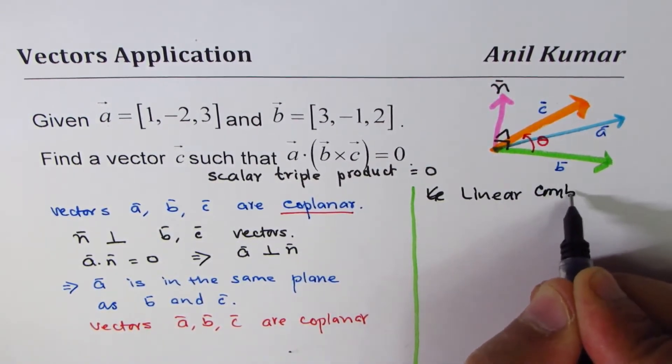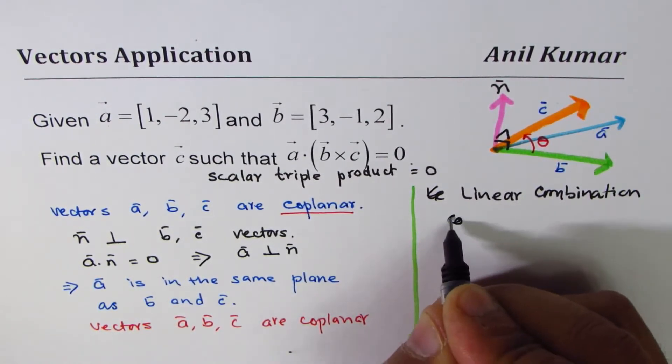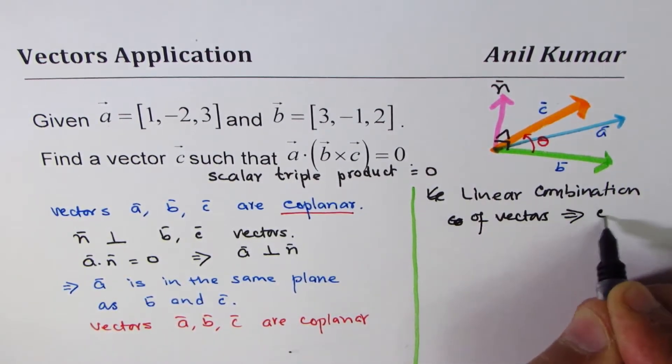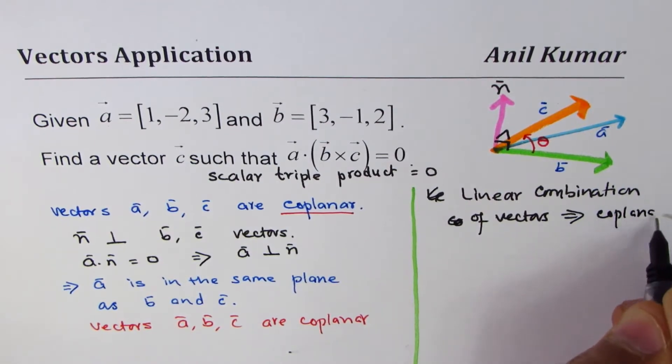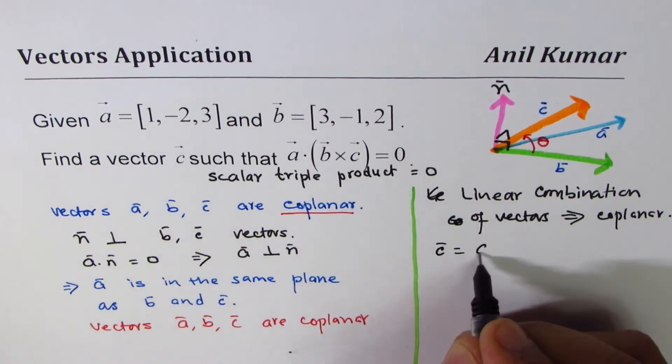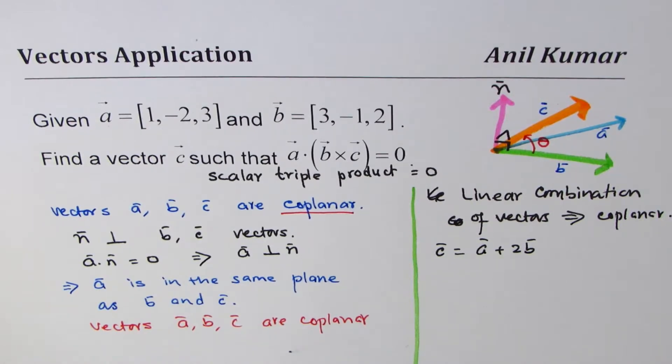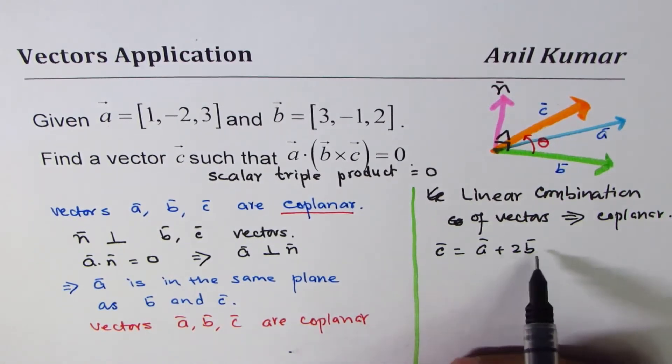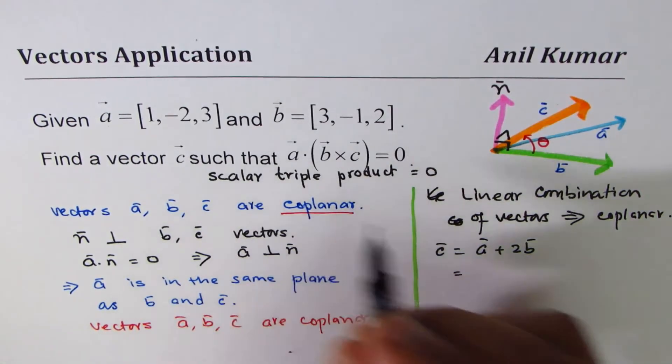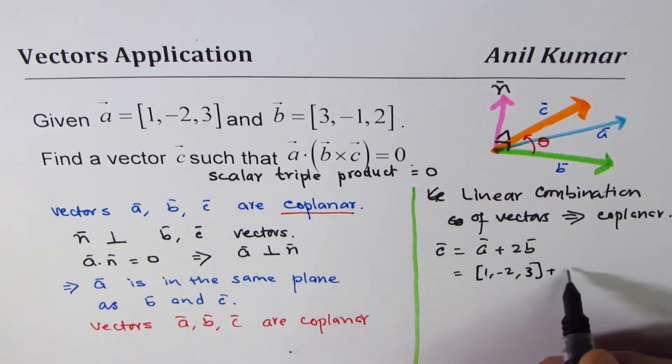We can say vector c could be vector a plus, let's say, 2b for example. That ensures that vector c, a, and b are all coplanar vectors. I could create this by doing linear combination.